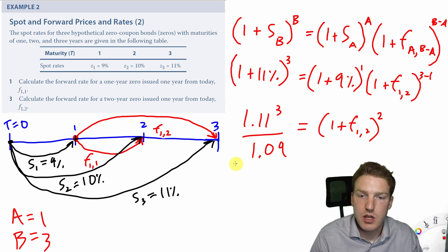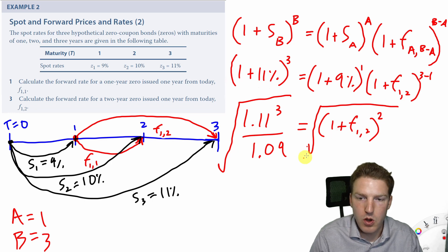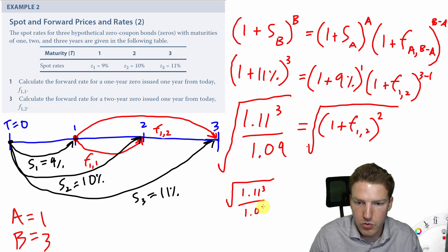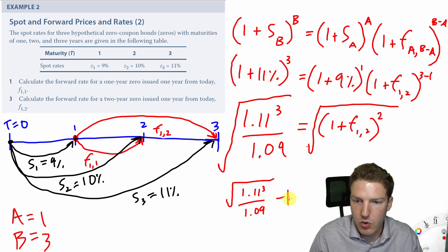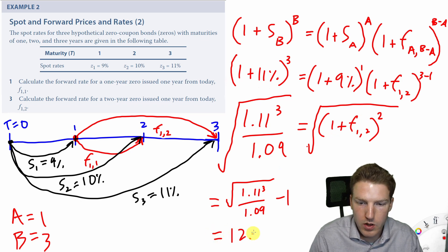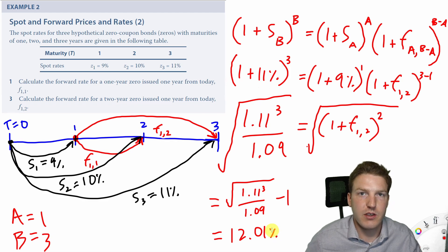But now we can just take the square root of both sides to get to F1 plus 1. So then we'll take this value, so we'll take the square root of 1.11³ over 1.09 minus 1. This gives us this forward rate here, which we'll find to be a value of 12.01% if you plug that into your financial calculators.